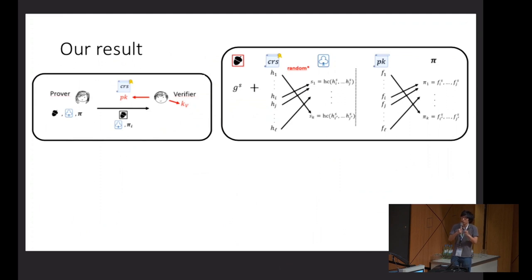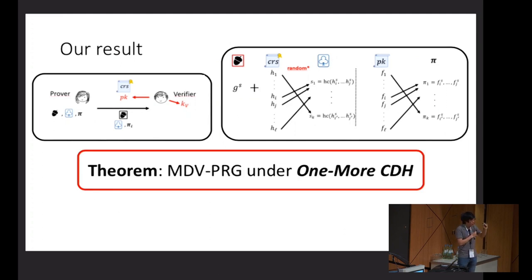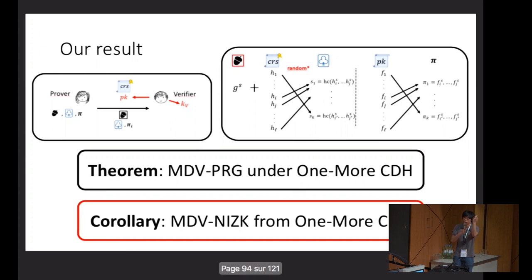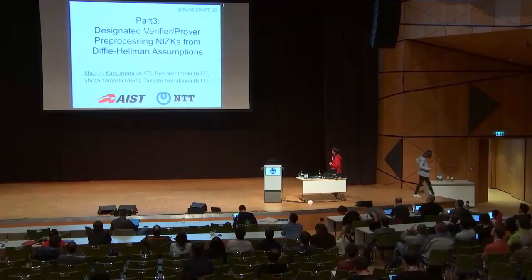What we show is that actually, if we pick this random graph in a slightly careful way, you can prove security against any adversarial strategy for any malicious verifier. Under a slightly stronger assumption, let's say a one-more-CDH assumption. It's like a one-more version of CDH. That will directly give malicious designated verifier NIZKs for one-more-CDH. And yeah. Next, Shui is going to talk about compact preprocessing NIZKs, I guess.